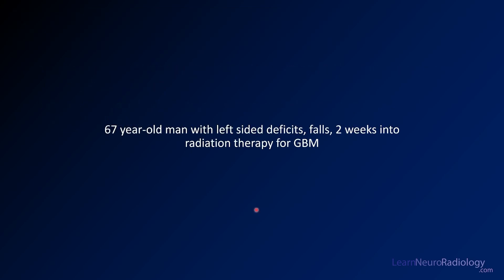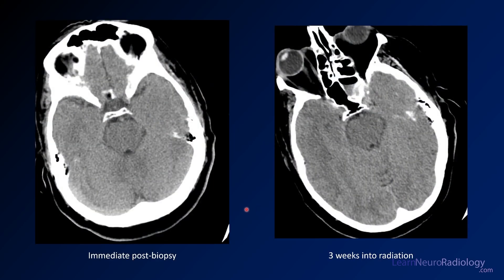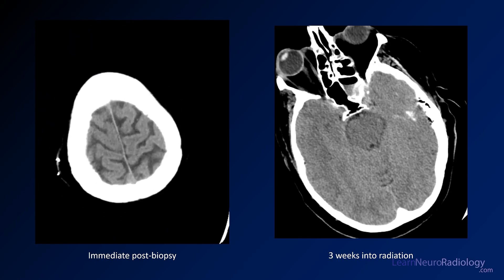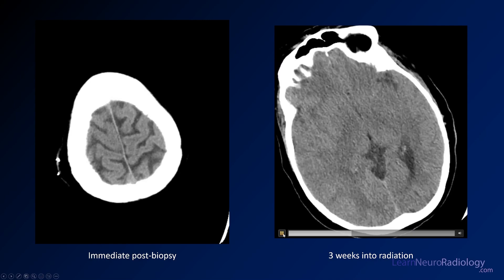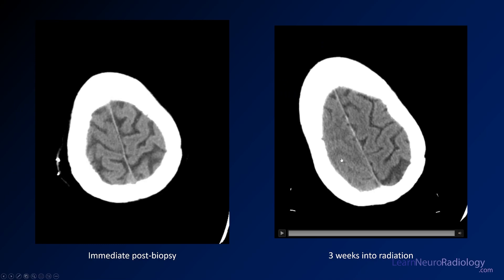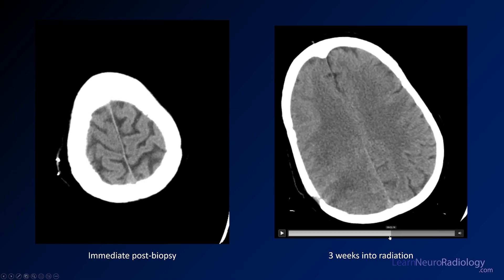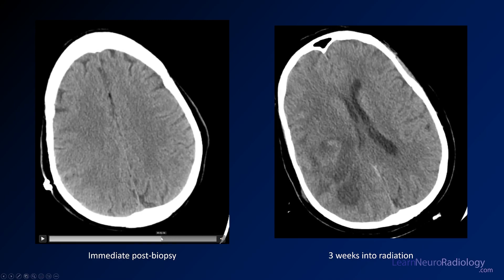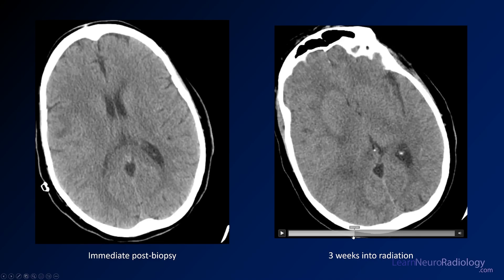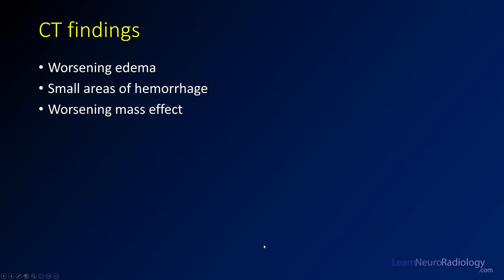Another case: a 67-year-old man with worsening left-sided deficit and falls two weeks into his radiation therapy for glioblastoma. Here's his immediate post-biopsy imaging — it looks not too bad, not a whole lot going on. When he gets three weeks into his radiation, however, it's a lot worse. You see much more swelling of this side, a lot more edema in that hemisphere, some areas of hemorrhage, increasing edema, and worsening mass effect on the lateral ventricle — it's displaced to the other side. On CT, you want to describe that worsening edema, worsening mass effect with small areas of hemorrhage, which are likely contributing to his symptoms.